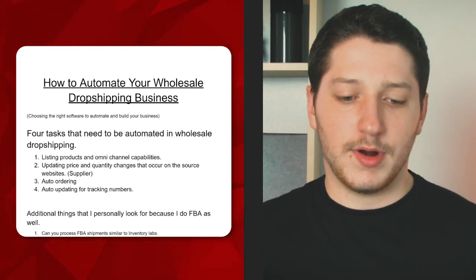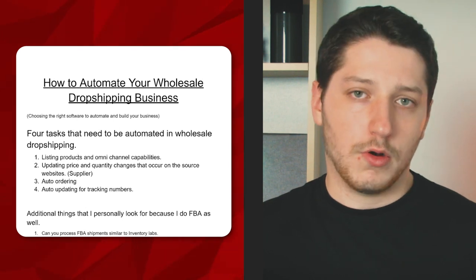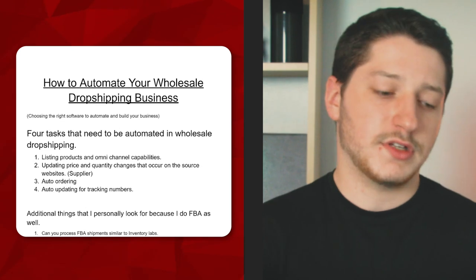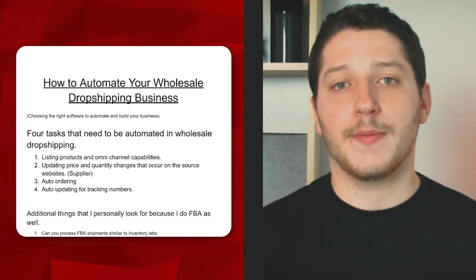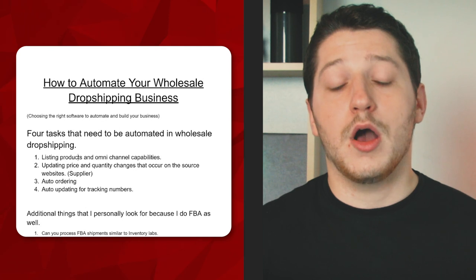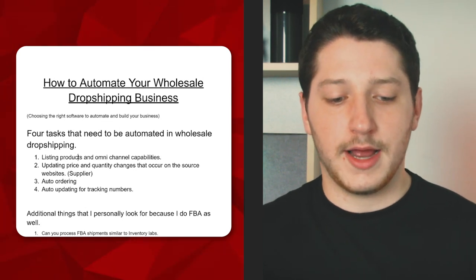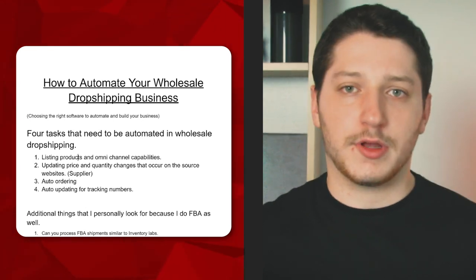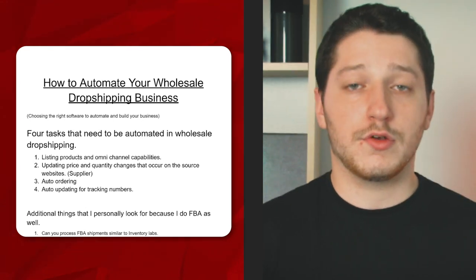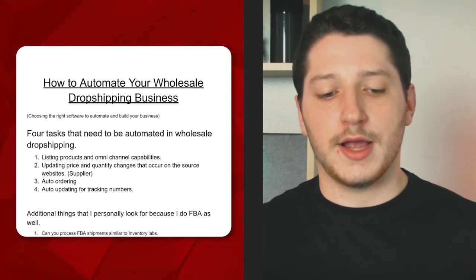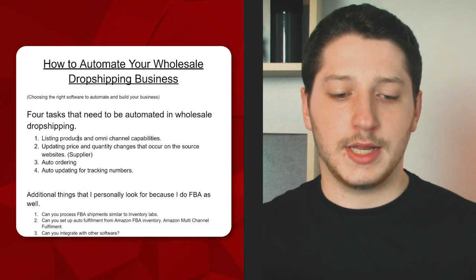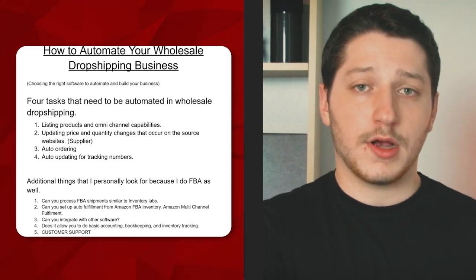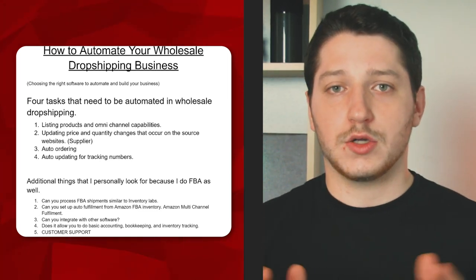The second task is updating price and quantity changes that occur on the supplier's websites. When an item goes out of stock or the price changes, the software needs to automatically update that information on the marketplaces where I'm selling it. Tasks three and four are auto-ordering: taking the customer and item information, sending that to the supplier, and then uploading the tracking number to the marketplace to complete the order.